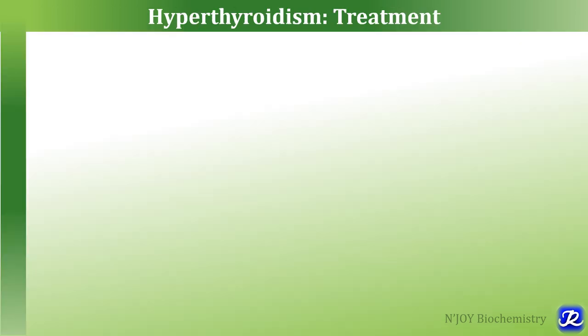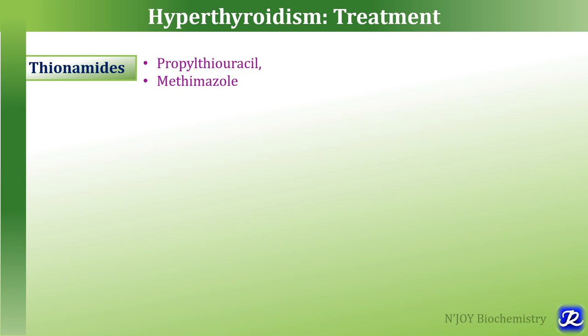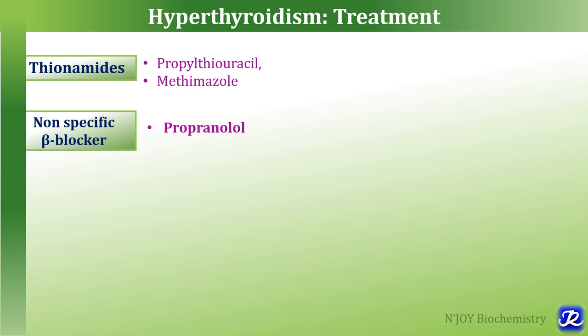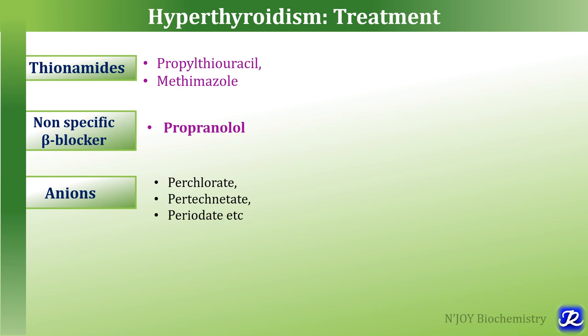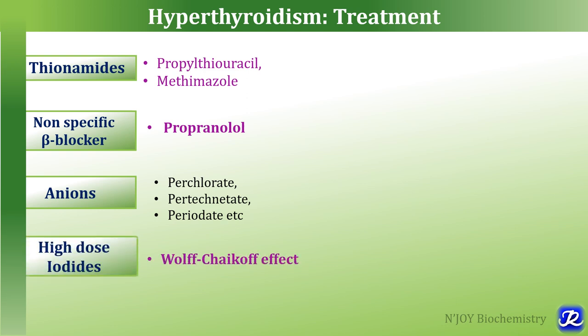Treatment of hyperthyroidism includes administration of thionamides — propylthiouracil and methimazole — and the non-specific beta blocker propranolol. Other options include anions like perchlorate, pertechnetate, and periodate. High-dose iodide can also be used, which is called the Wolff-Chaikoff effect — the opposite of the Jod-Basedow effect, where high-dose iodide reduces hyperthyroidism. Radioiodine therapy is also available.